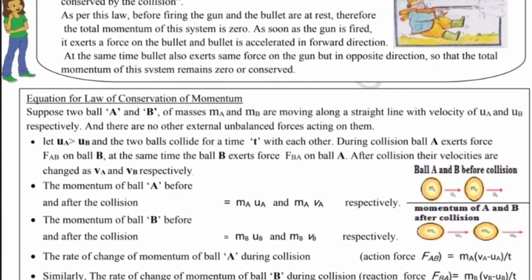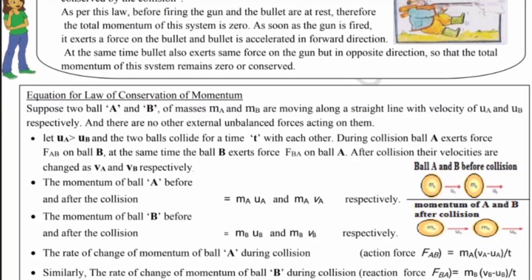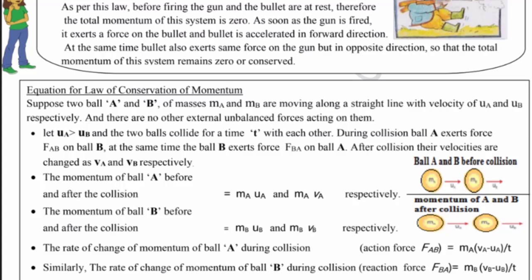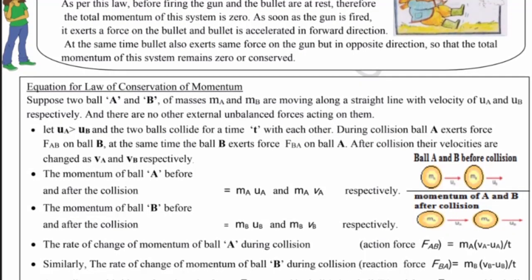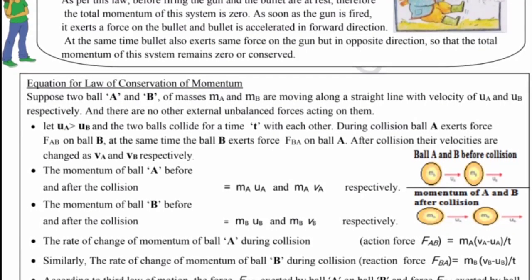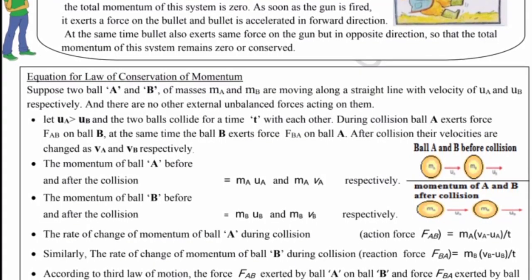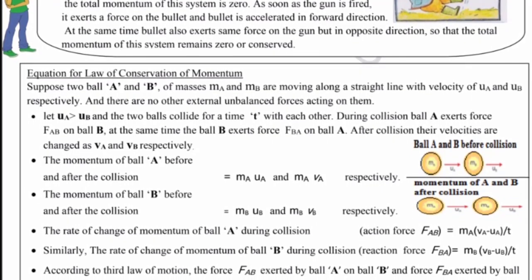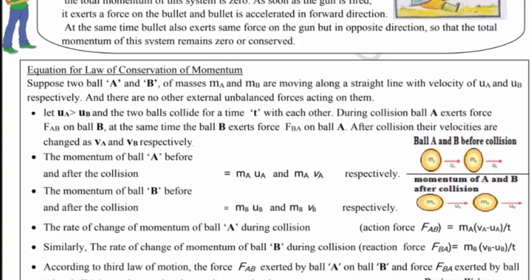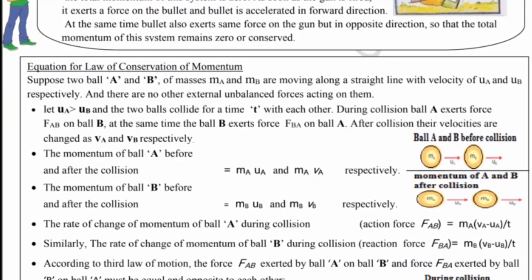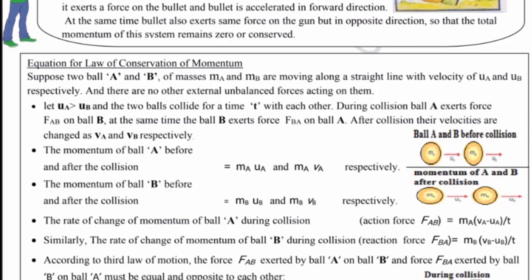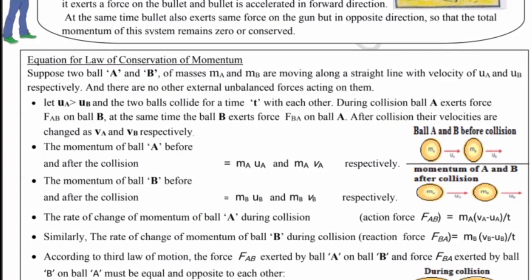During collision, ball A exerts force FAB on ball B. At the same time, the ball B exerts force FBA on ball A. After collision, their velocities are changed as vA and vB respectively. The starting velocity u becomes v after collision.